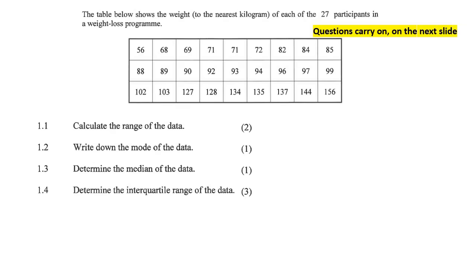The table below shows the weight to the nearest kilogram of 27 participants in a weight loss program. Calculate the range. The range is always the highest minus the lowest, which would be 156 minus 56, which is 100.